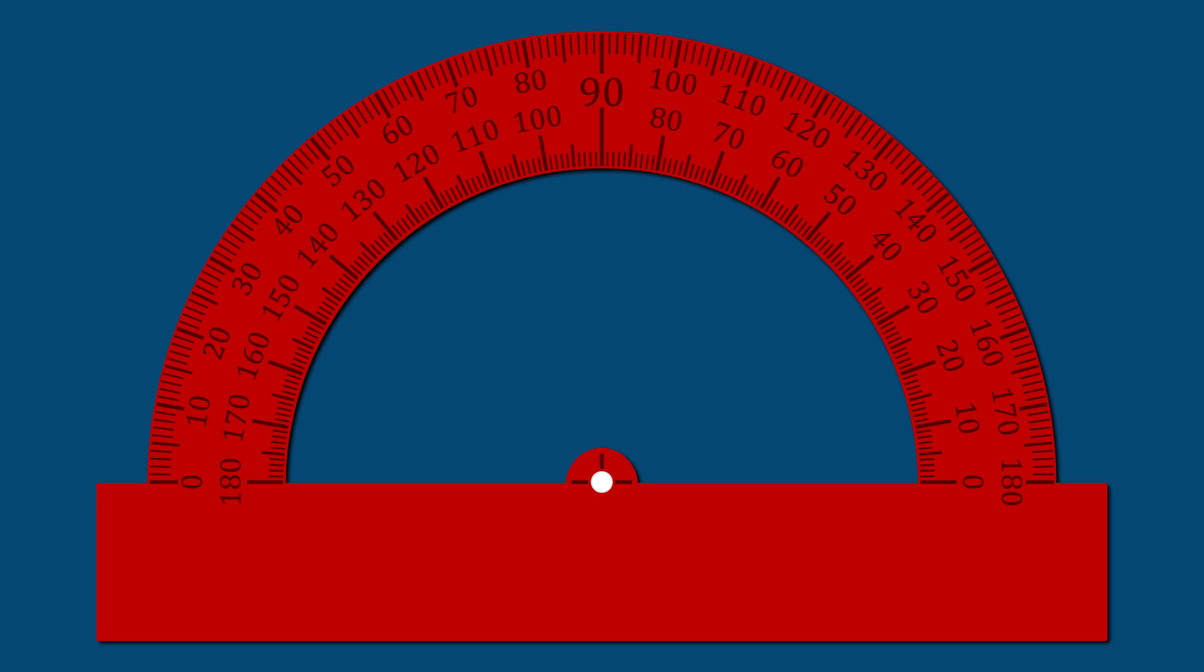A protractor is a small plastic half-circle, and it has measurements along the arch of the half-circle.